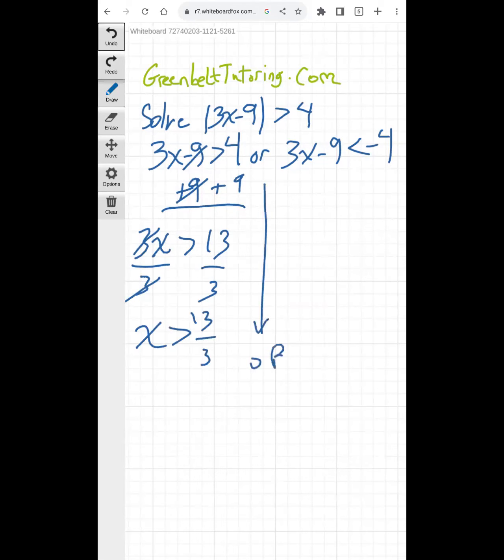The other solution, the OR comes down, and we solve this inequality. Add 9 to both sides of the inequality. Minus 9 plus 9 equals 0. 3x is less than negative 4 plus 9 is 5. So divide both sides of this inequality by 3, and you're left with x is less than 5 over 3.